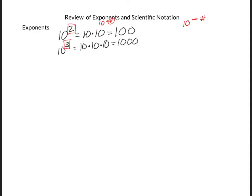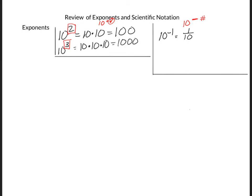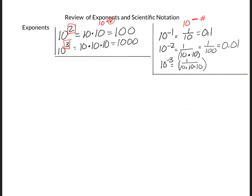So what does it mean when there's a negative number? 10 to the negative 1 is the same as 1 divided by 10, or 0.1. 10 to the power of negative 2 is 1 divided by 10 times 10, which is 1 divided by 100, or 0.01. And 10 to the negative 3 would be 1 divided by 10 times 10 times 10, or 1 divided by 1,000, which is 0.001.